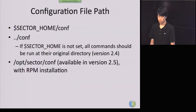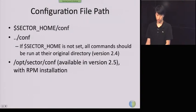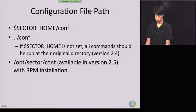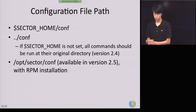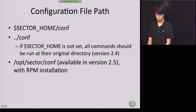Sector locates its configuration files using a single environment variable called SECTOR_HOME. You can specify this and all sector commands will find the configuration information from that directory. If you don't specify it, it assumes you run all commands in the current directory and looks for configuration in the upper directory. When the RPM is available, sector will be installed at the /opt directory.